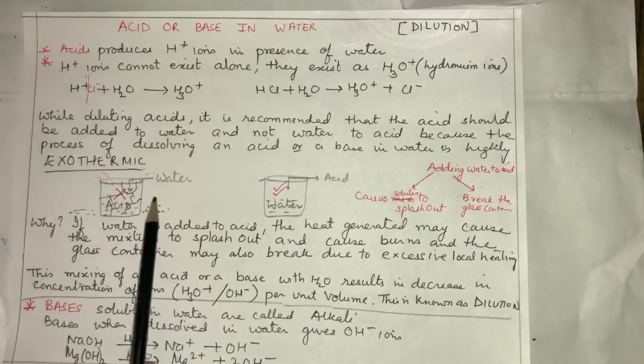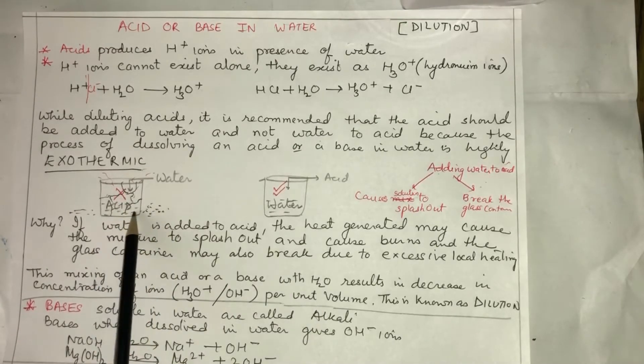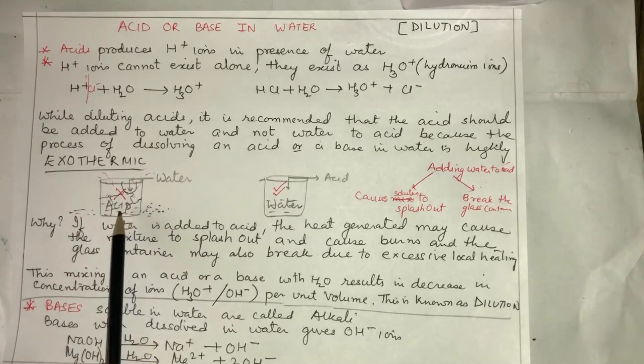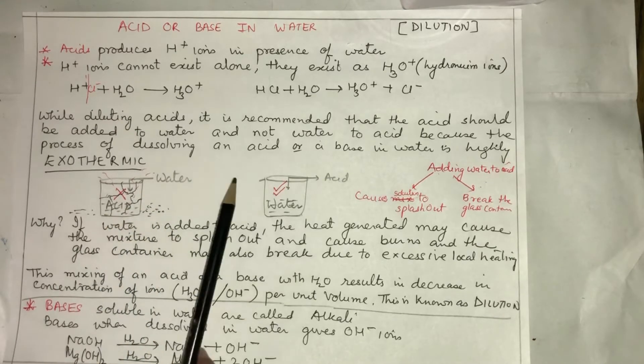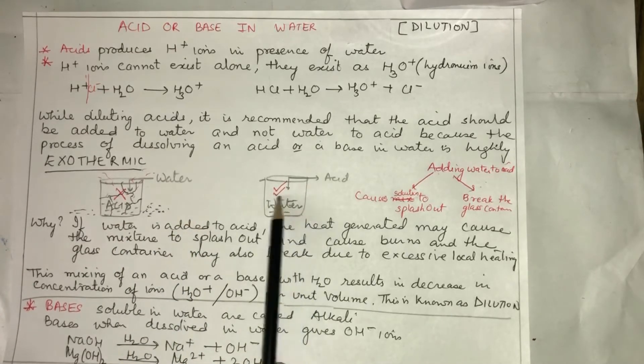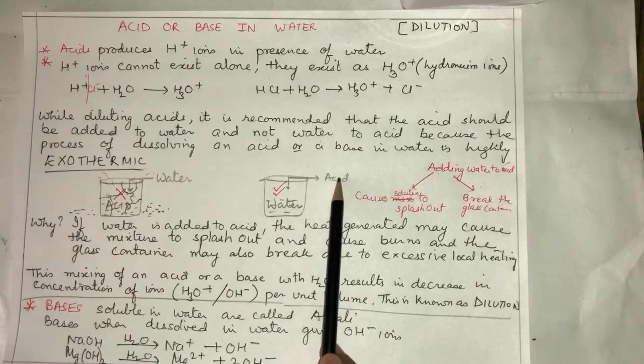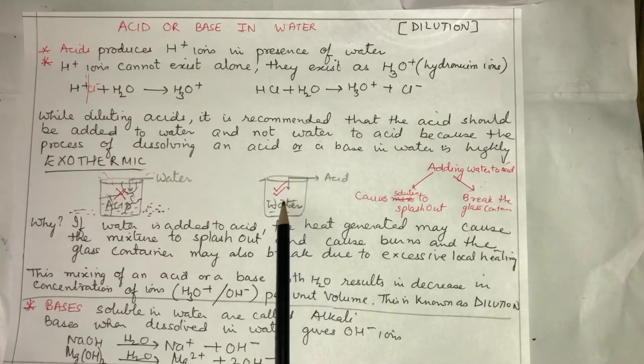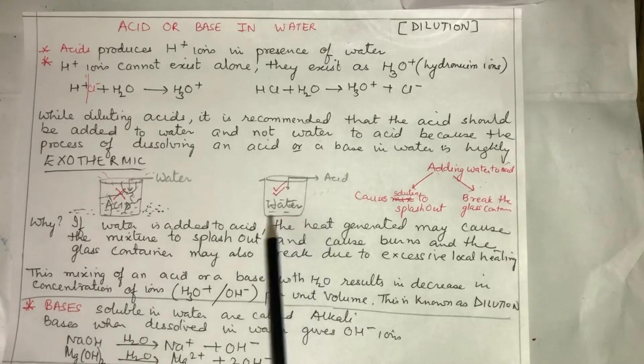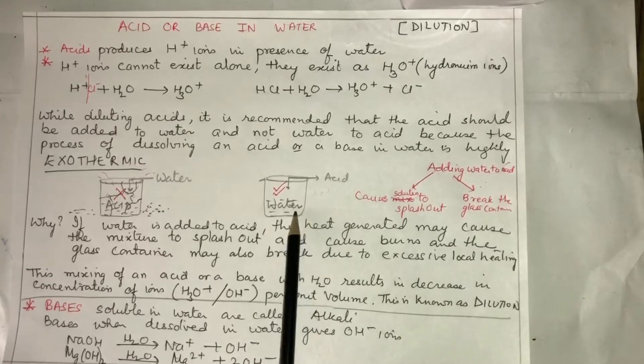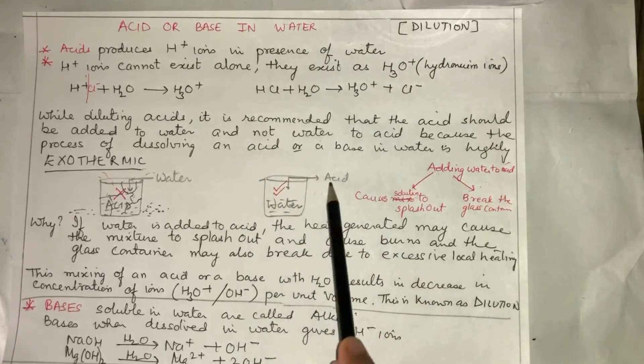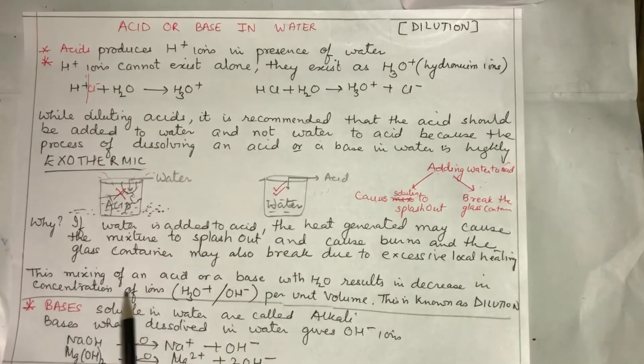Kya hootah? Splash hootah hai, woh tute jayega. Lekin agar aapne thoda sa acid pani mein daala, toh jaise acid ka H+ tutega, uske paas bahut saare H2O molecules honge H3O+ banane ke liye. Toh waha pe splashing nahin hogi, aapka beaker nahin tutega.